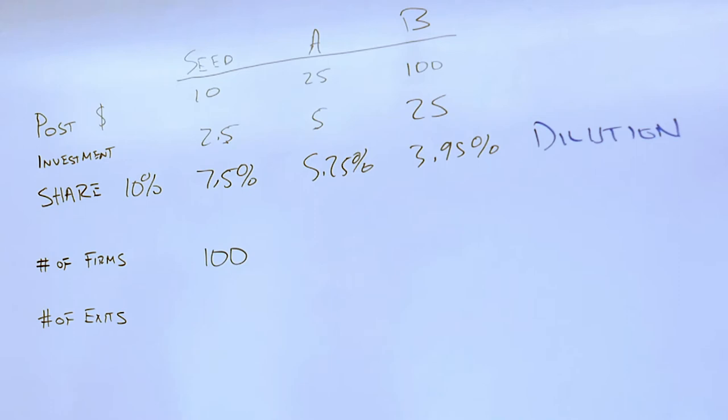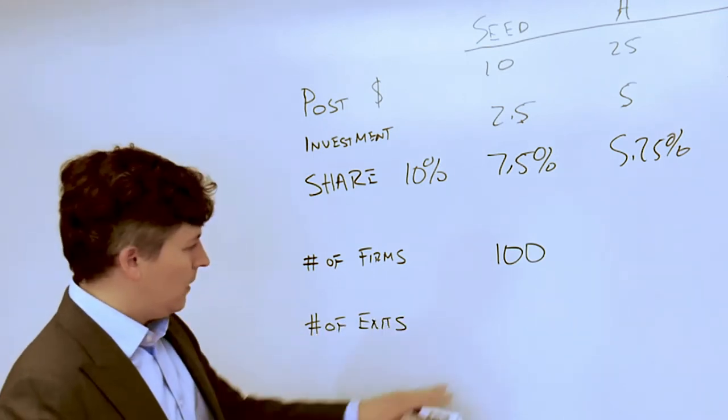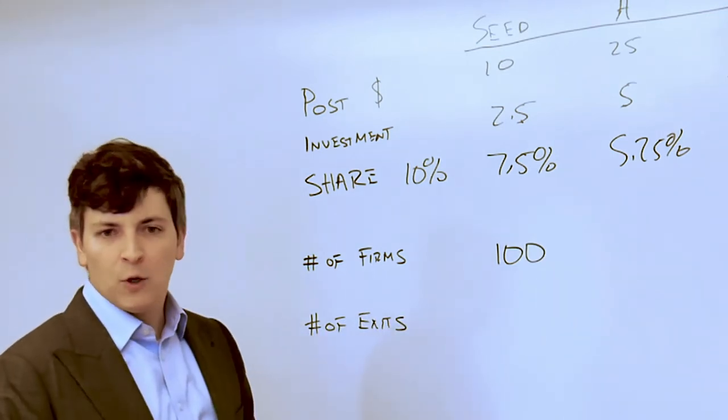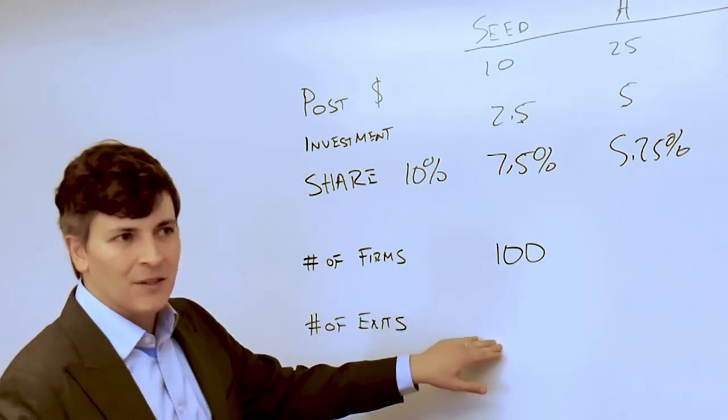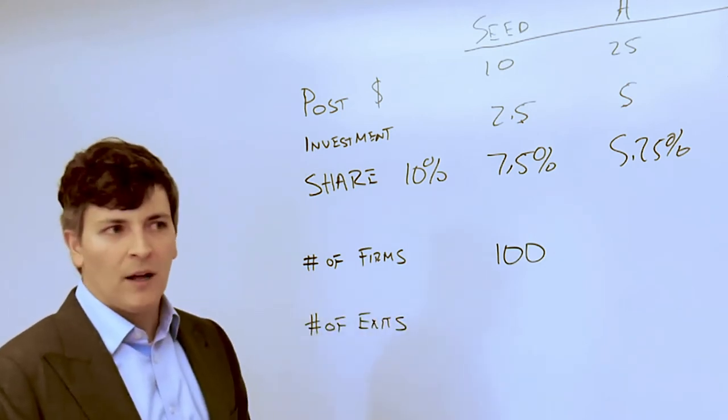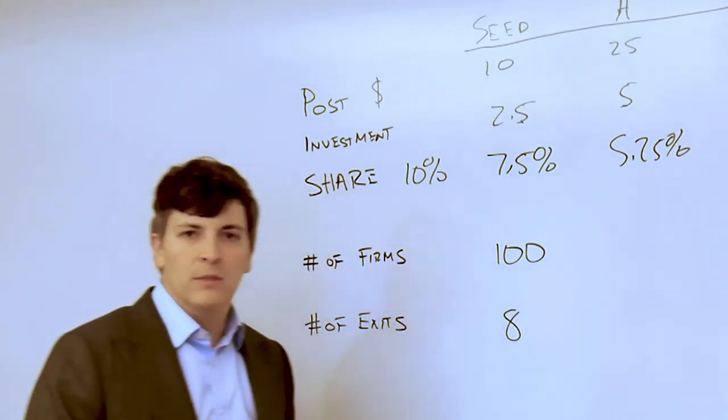What does the probability of success look like on average, and how should you think about this probability in terms of your own experience? Well, if 100 firms receive seed money, in the data it looks like fewer than 10 of these 100 firms will exit at the seed round above the value of the capital that is invested. This is about 8 total firms that will exit.